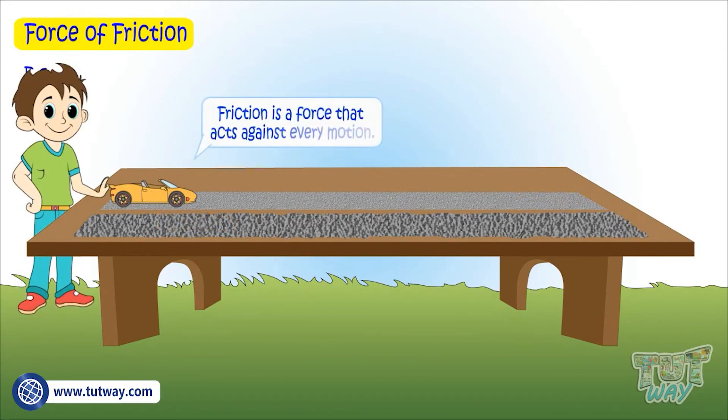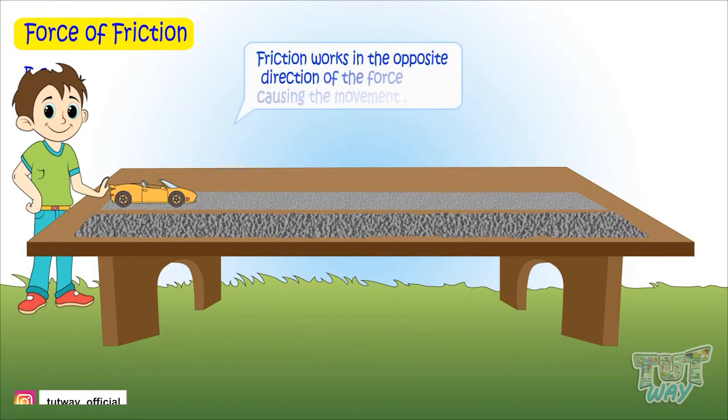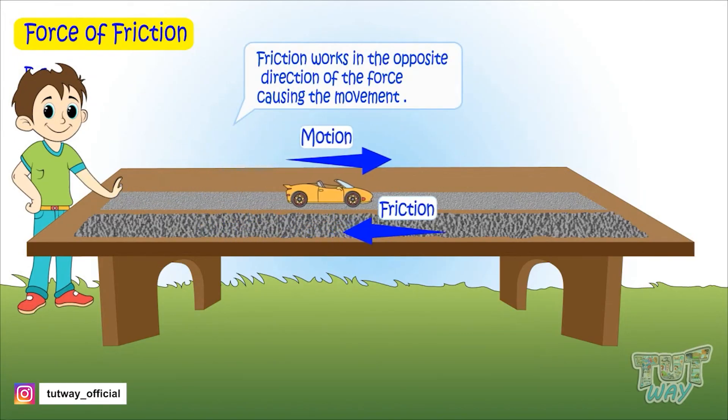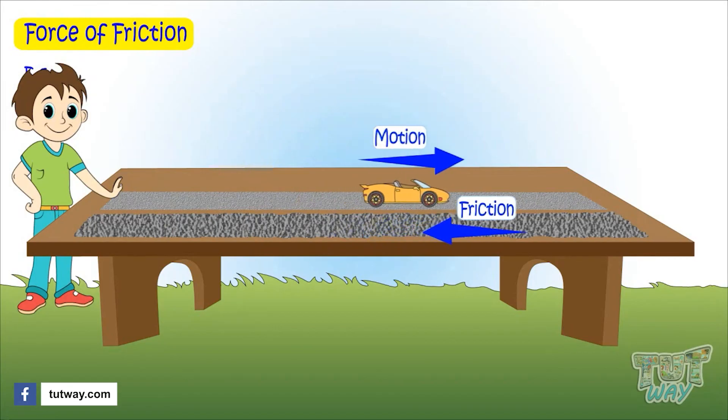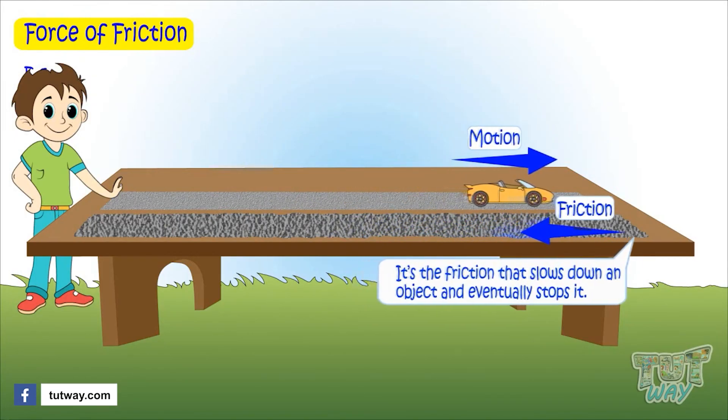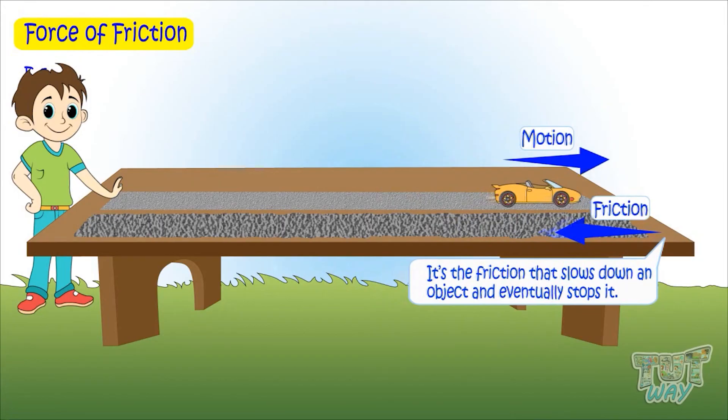So friction is a force that acts against every motion and it works in the opposite direction of the force causing the movement. It is because of the friction that the object slows down and eventually stops.